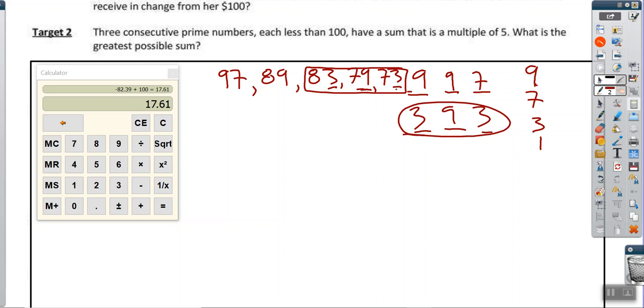What is the greatest possible sum? We're just going to add these three numbers together. So we have 83 plus 79 plus 73. And so you get 235. And that is your answer.